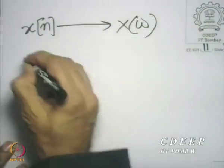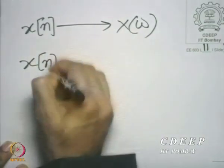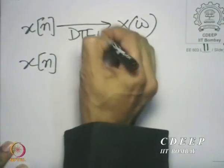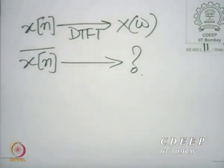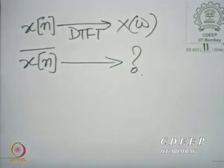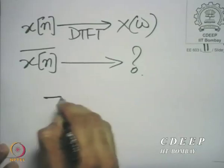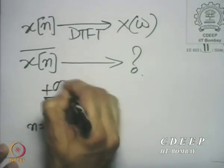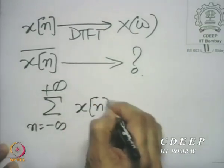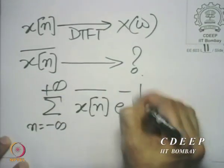We will proceed then with the discussion of some more properties of the discrete time Fourier transform — namely, let us look at what happens when we complex conjugate. If you know that the discrete time Fourier transform of x[n] is capital X(omega), what is the discrete time Fourier transform of x̄[n]? That is the question we would like to ask. Let us calculate the discrete time Fourier transform of this.